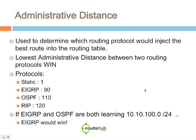Administrative distance is a feature or concept used to determine which routing protocol would inject the best route into the global routing table. When host A wants to communicate with host B, the request goes to its local router and it looks at its routing table. There are other routing tables for OSPF and EIGRP, but it's the global routing table the router uses to determine how to route to the next hop or path. The lowest administrative distance between two routing protocols wins.